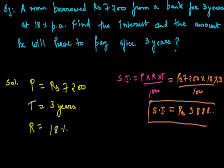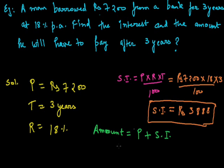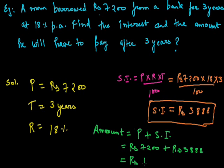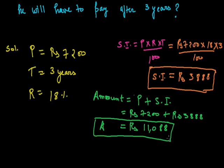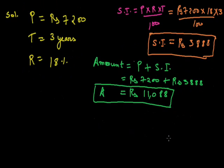We have done the first part. Now we have to calculate the amount. We know that the amount is equal to principal plus the simple interest. So the principal is Rs. 7200 and the simple interest we calculated is Rs. 3888. So the amount will be equal to Rs. 11088. Our amount is equal to Rs. 11088. This was the question where we calculated the simple interest and the amount.